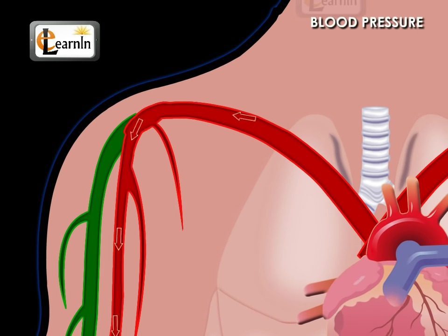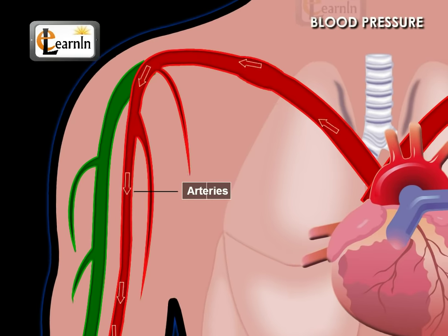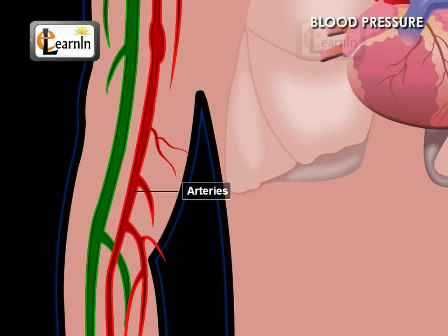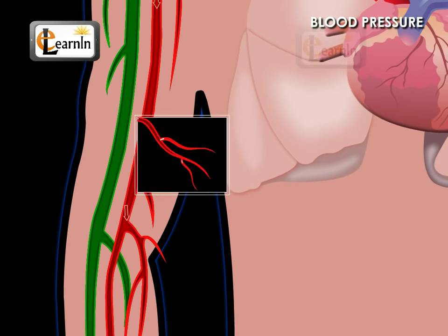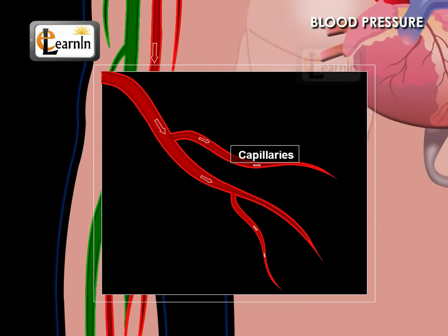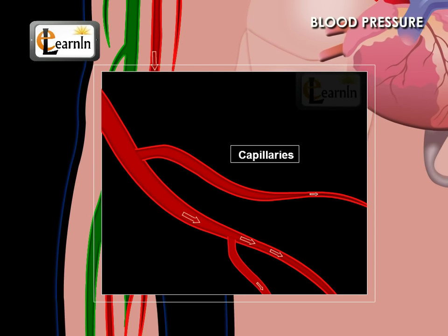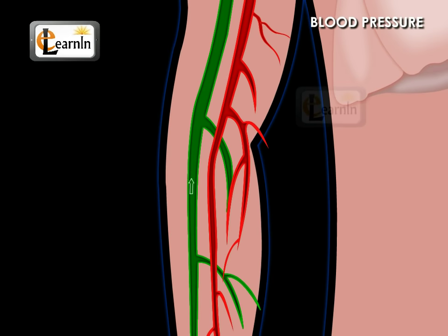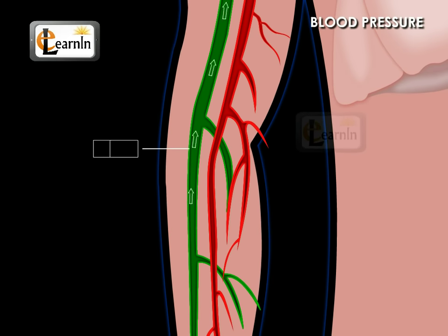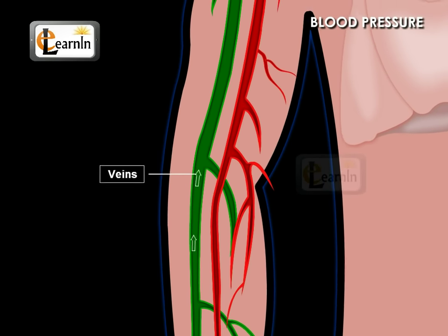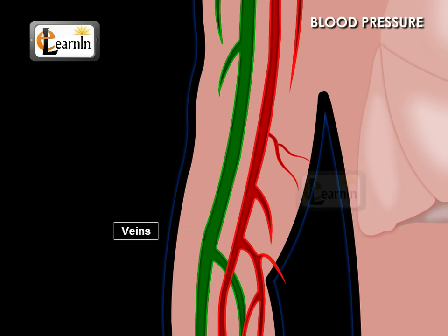Arteries receive blood from the heart, so blood pressure is higher in the arteries. The blood pressure gradually decreases as blood flows into capillaries. When this blood is collected into veins, blood pressure is greatly reduced. So, blood pressure is less in the veins when compared to the arteries.